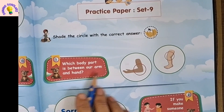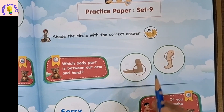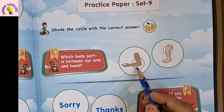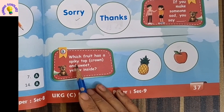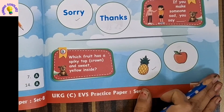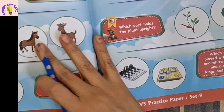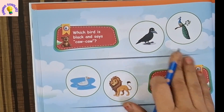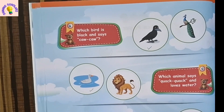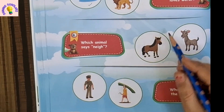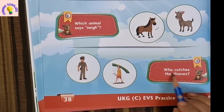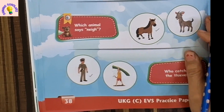Next set is set 9. First question: which body part is between our arm and hand? This is the elbow. Next question: if you make someone sad, you say sorry. Which fruit has a spiky crown and sweet yellow inside? It's pineapple — pineapple has a crown above its head. Which bird is black and says caw caw? Crow says caw caw. Which animal says quack quack and loves water? It's duck. Which animal says neigh? It's a horse. Who catches the thieves? It's the policeman.